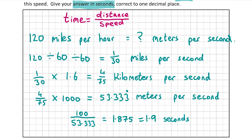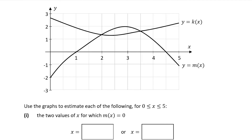The answer to one decimal place is 1.9 seconds. So the falcon took 1.9 seconds to dive 100 meters. To summarise: I converted miles per hour → miles per second → kilometers per second → meters per second, then used time = distance ÷ speed to get the final answer of 1.9 seconds.